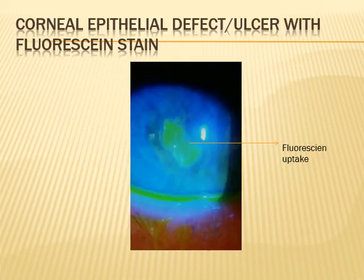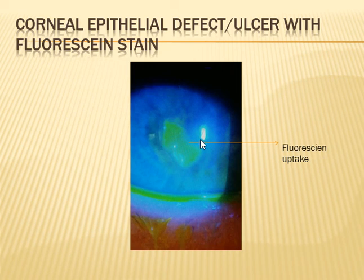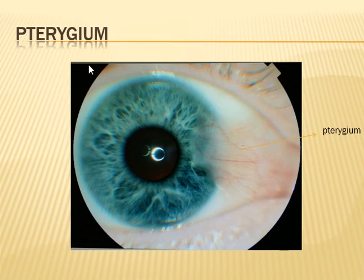One of the stains very commonly used in ophthalmology is the fluorescein stain. This is fluorescein staining of the cornea — you can see some fluorescein uptake, which indicates either a corneal epithelial defect or a corneal ulcer where there is a defect in the corneal epithelium that is taking up the stain.